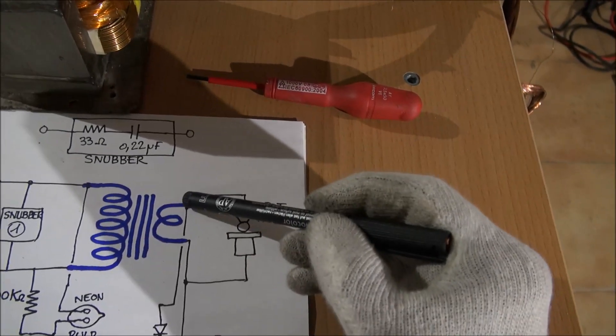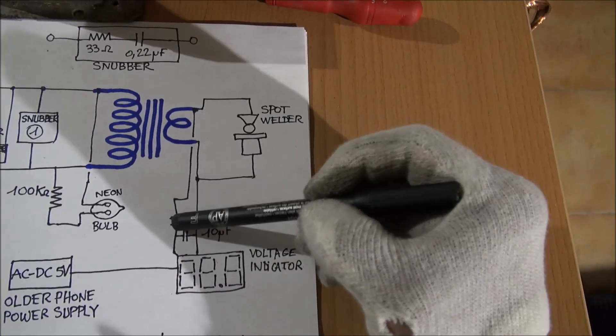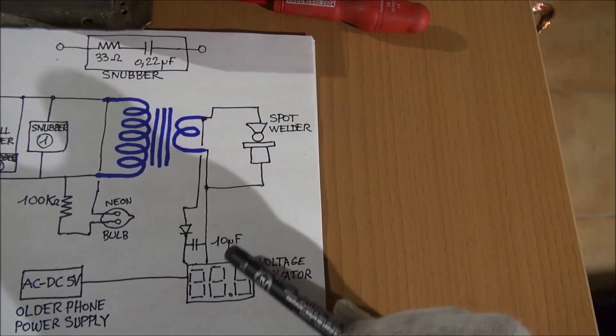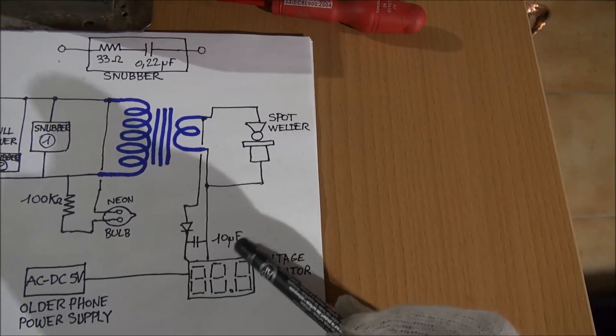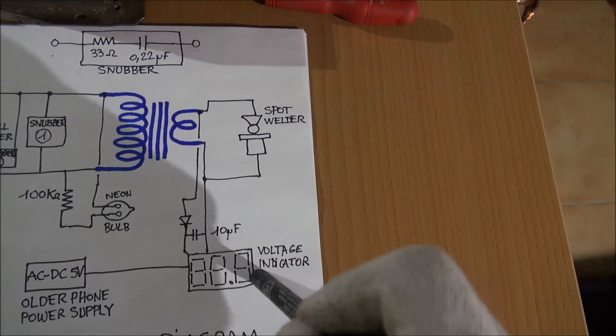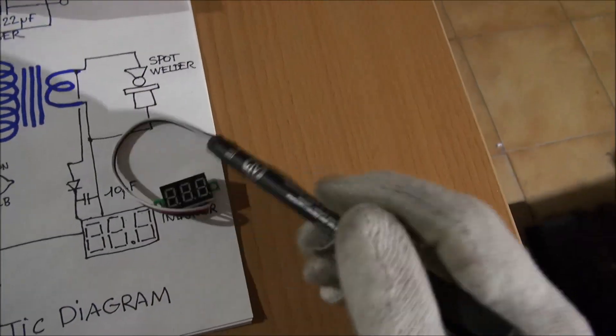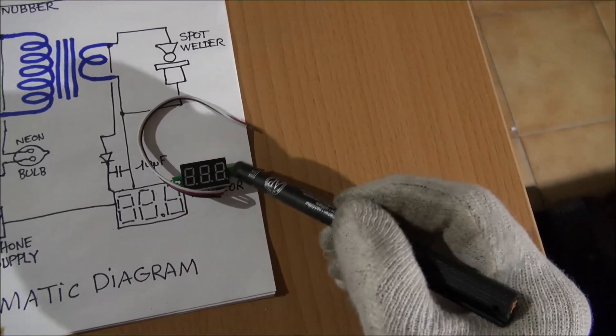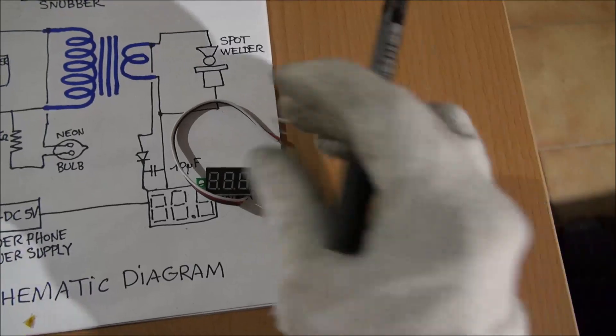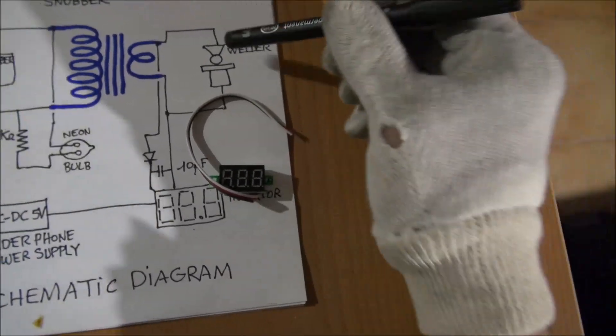On this wire you must take the information with a Schottky diode here and a capacitor of 10 microfarads, and you must feed this voltage indicator. The voltage indicator is something like this.